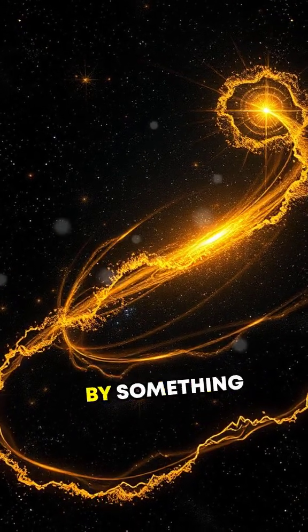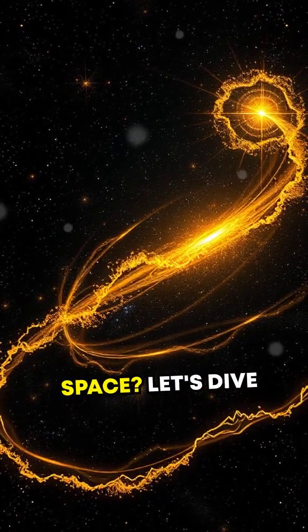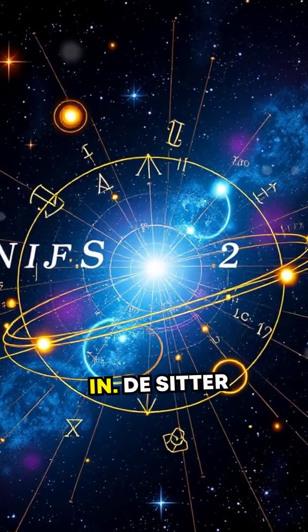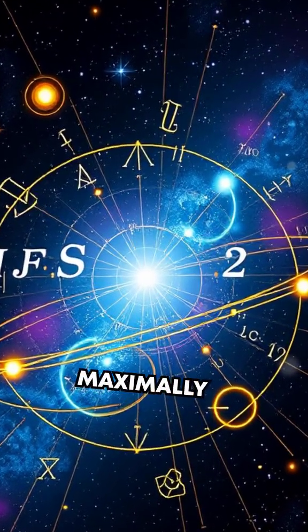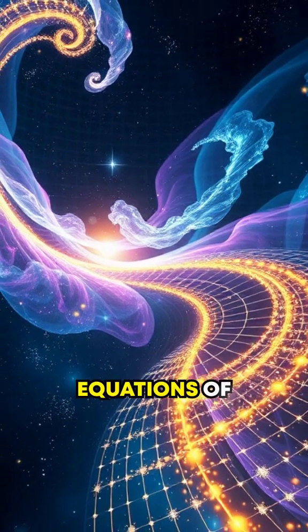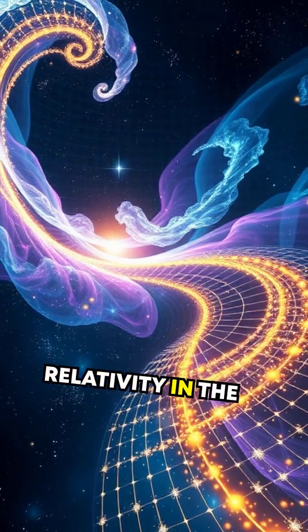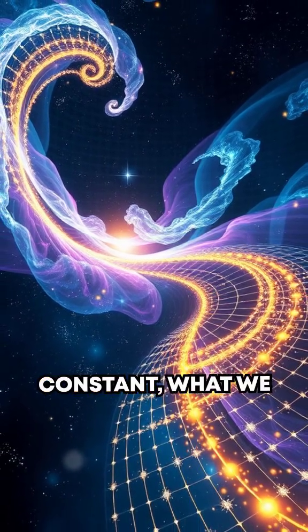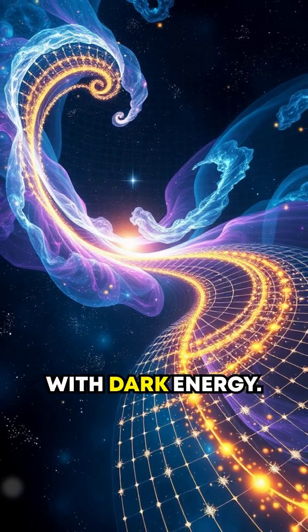Did you know that our universe might be defined by something called de-sitter space? Let's dive in. De-sitter space is a maximally symmetric solution to Einstein's equations of general relativity in the presence of a positive cosmological constant, what we often associate with dark energy.